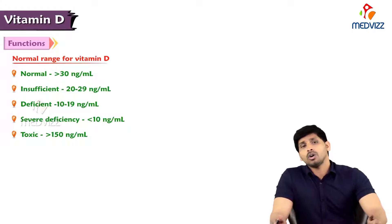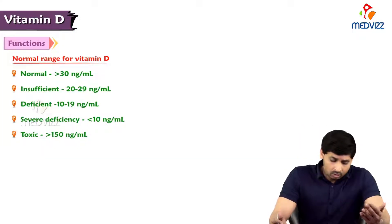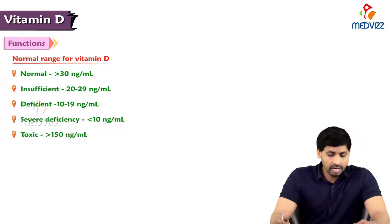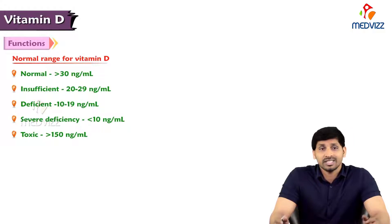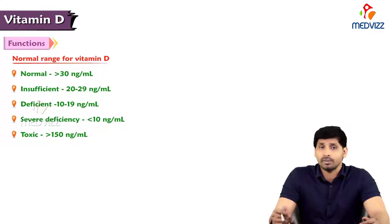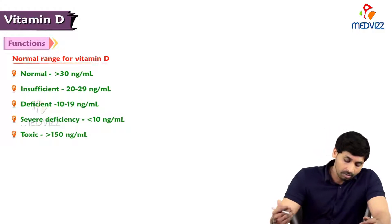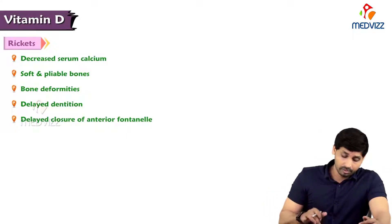Before discussing deficiency manifestations, you should know the normal range of vitamin D. Normal serum vitamin D is above 30 nanograms per ml. Insufficient is 20–29 nanograms per ml. Deficient is 10–19 nanograms per ml. Severe deficiency is less than 10 nanograms per ml. Toxicity, or hypervitaminosis, occurs when plasma vitamin D levels exceed 150 nanograms per ml.